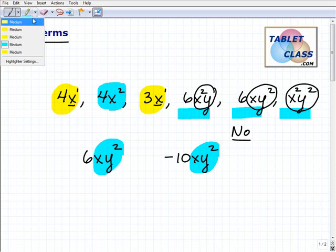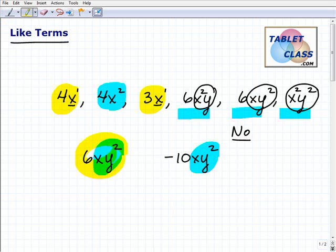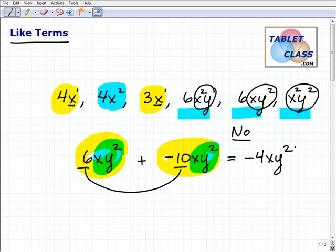So what does that mean? Well, it simply means we can just add these up. So if I have 6xy²s, and I have negative 10xy²s over here, how many xy²s do we have altogether? Well, we just simply add the coefficients. So in other words, I'm going to add these up. 6 plus negative 10 is negative 4xy². And if you didn't know that 6 plus negative 10 was negative 4, then you have bigger problems than like terms.